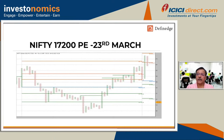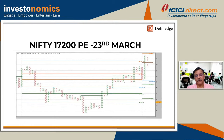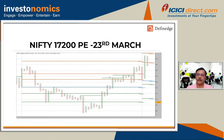Once you buy two lots and exit one lot on a 1R move in your favor — say from 125 to 150 — the trade becomes risk-free even if the stop loss is hit on the remaining lot. Being risk-free makes you much more relaxed to trail the second lot. The easiest thing for people who find trailing difficult is partial booking, and for that you need at least two lots. Many people trade only one lot, which does not help.